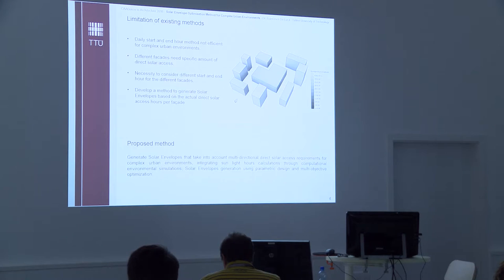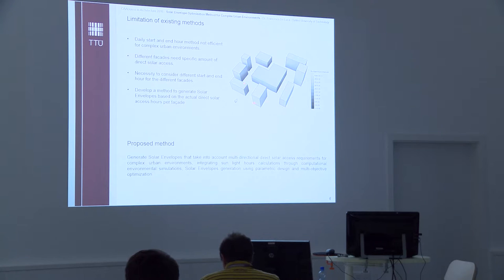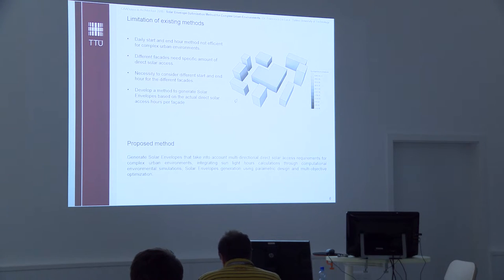All these methods are efficient when calculating the solar envelope for one facade without any surrounding context, but in more articulated environments there are some limitations. The first limitation is the start and end hour, because when we have different facades with different orientations those need different start and end hours. Most importantly, since we are talking about the Estonian regulation stating that buildings should receive 50% of what they receive currently, in a complex urban environment we don't really know how many direct solar access hours a facade receives. So it would be better if we could use the actual amount of direct solar access per facade as one of the inputs to generate the solar envelope.